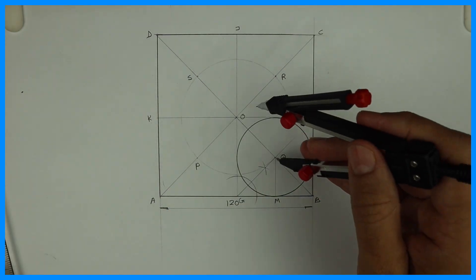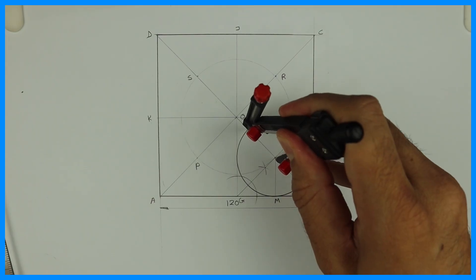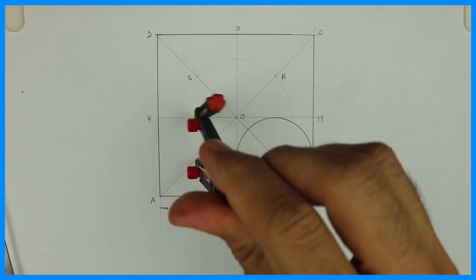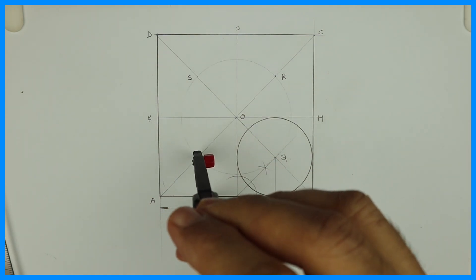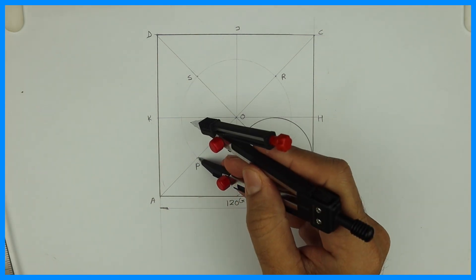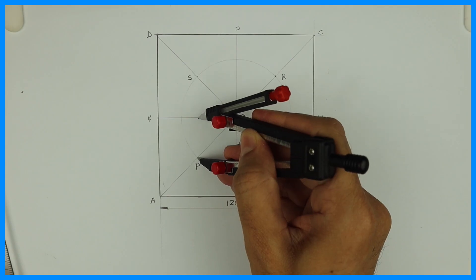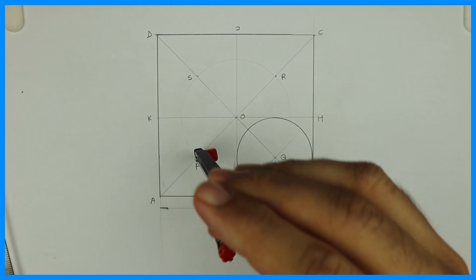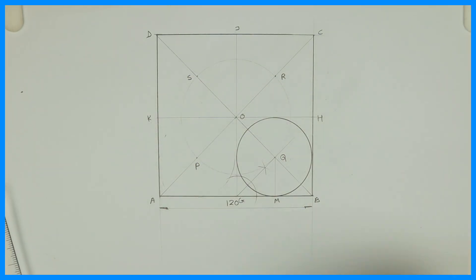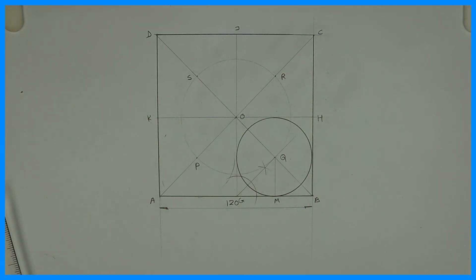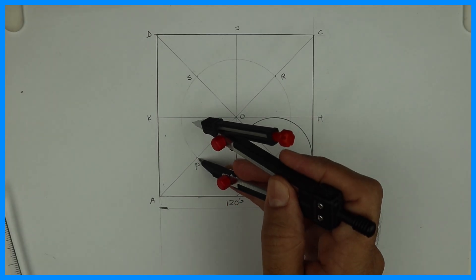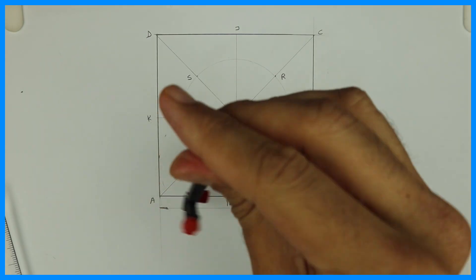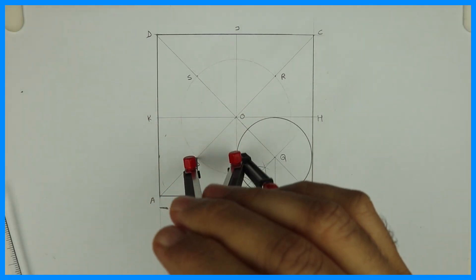Now again we will take the same radius Q to M. And we will draw four circles. See from P we will draw circle. Make sure that it should touch two sides and two other circles. If it is overlapping, that means we need to do it again. We need more practice. So from P you can draw circle, radius equals to QM.